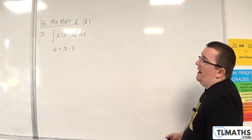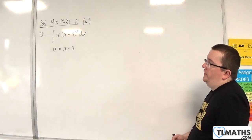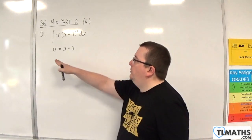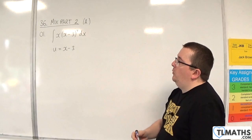This is number 1, the integral of x(x-3)^4 dx, and we've been told to use the substitution u = x - 3.